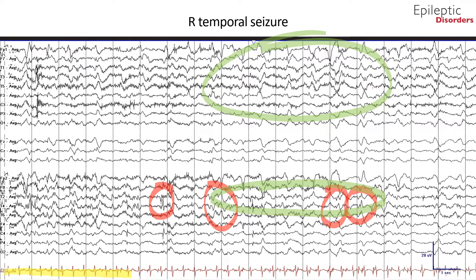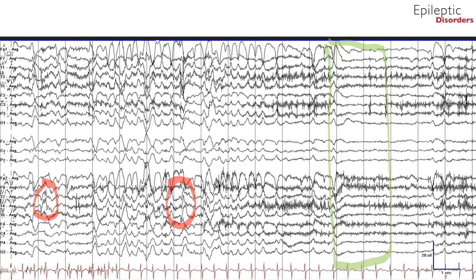Also noted again is tachycardia in the EKG channel below, which can be seen in temporal lobe seizures. In the last page of this seizure shown in average montage, the frequency of epileptiform discharges experiences a decrescendo pattern, subsiding and coming to a gradual end with postictal EEG suppression noted over all channels.